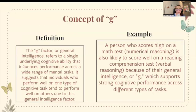We're going to start with the concept of G. The G factor, or general intelligence, refers to a single underlying cognitive ability that influences performance across a wide range of mental tasks. It suggests that individuals who perform well on one type of cognitive task tend to perform well on others. For example, a person who scores high on a math test (numerical reasoning) is also likely to score well on a reading comprehension test (verbal reasoning) because of their general intelligence, or G, which supports strong cognitive performance across different types of tasks.